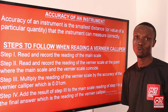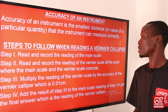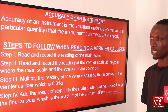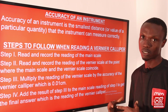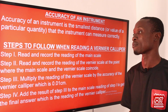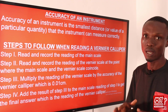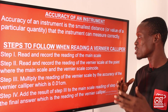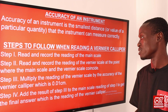By accuracy of an instrument, we mean the smallest distance or value of a particular quantity that the instrument can measure correctly. The steps to follow when reading a vernier caliper are: step one, read and record the reading of the main scale. Step two, read and record the reading of the vernier scale at the point where the main scale coincides with the vernier scale.